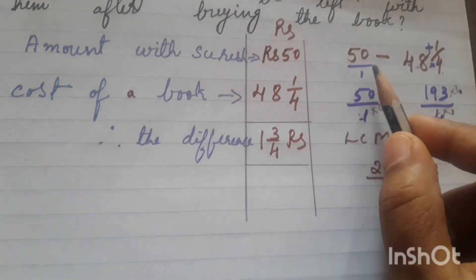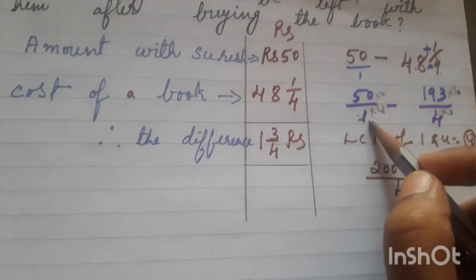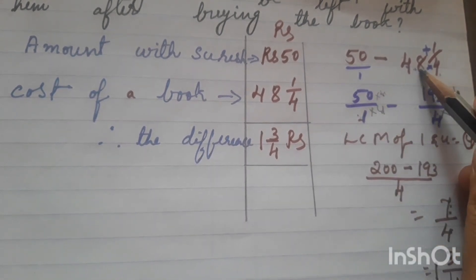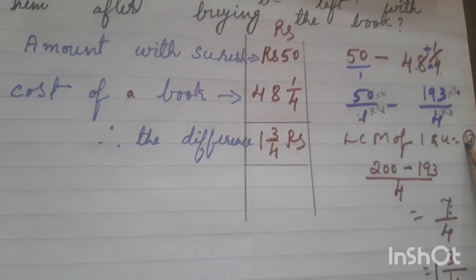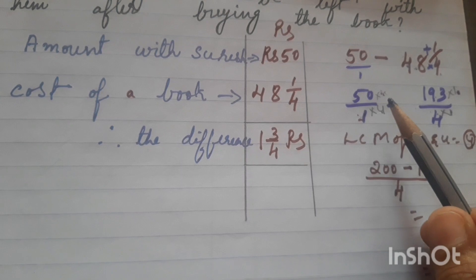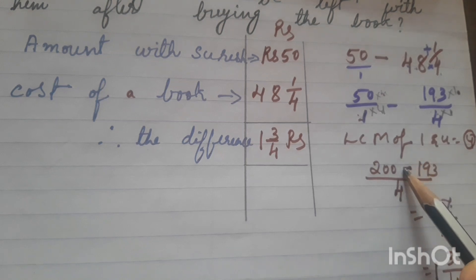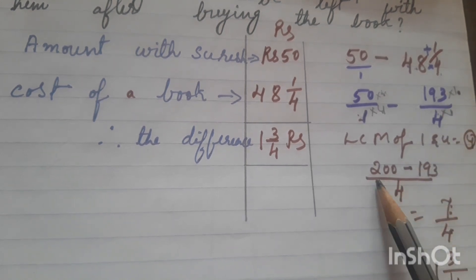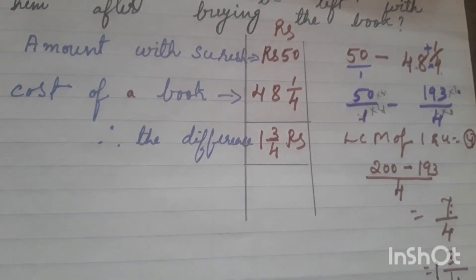To recap: we converted 50 into fraction form as 50 by 1 minus 193 by 4. LCM of 1 and 4 is 4. Denominators are equalized: 50 times 4 is 200, minus 193 times 1 is 193. After subtraction we get 7 by 4. Converting to mixed fraction: 4 times 1 is 4, 4 plus 3 is 7. So the answer is 1 and 3 by 4.